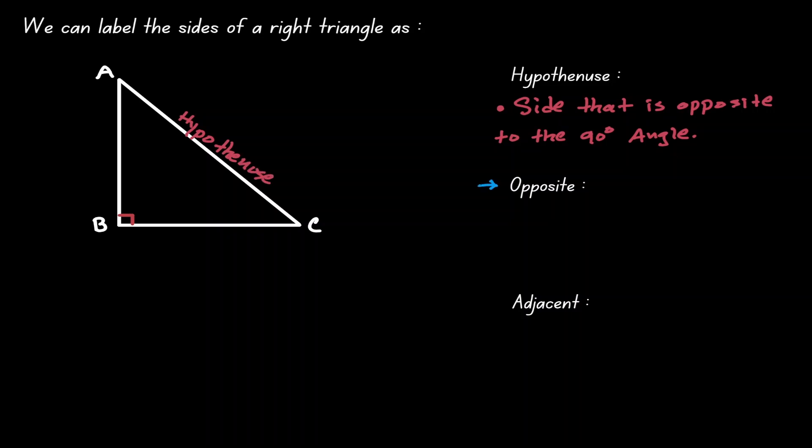To label the opposite side and the adjacent side, we need to have a point of view, and this point of view we're going to call our reference angle.